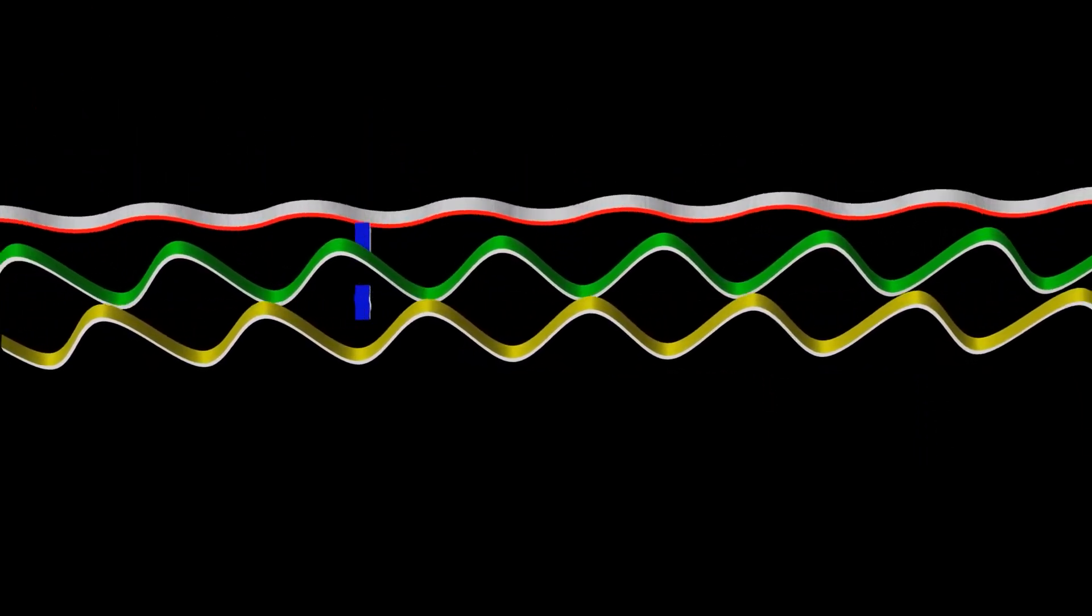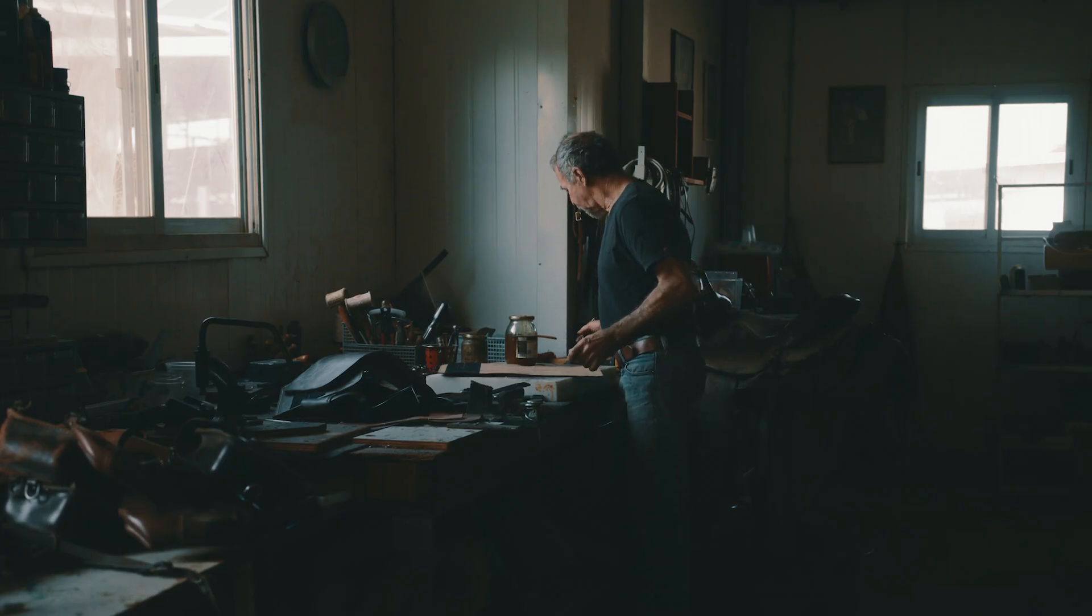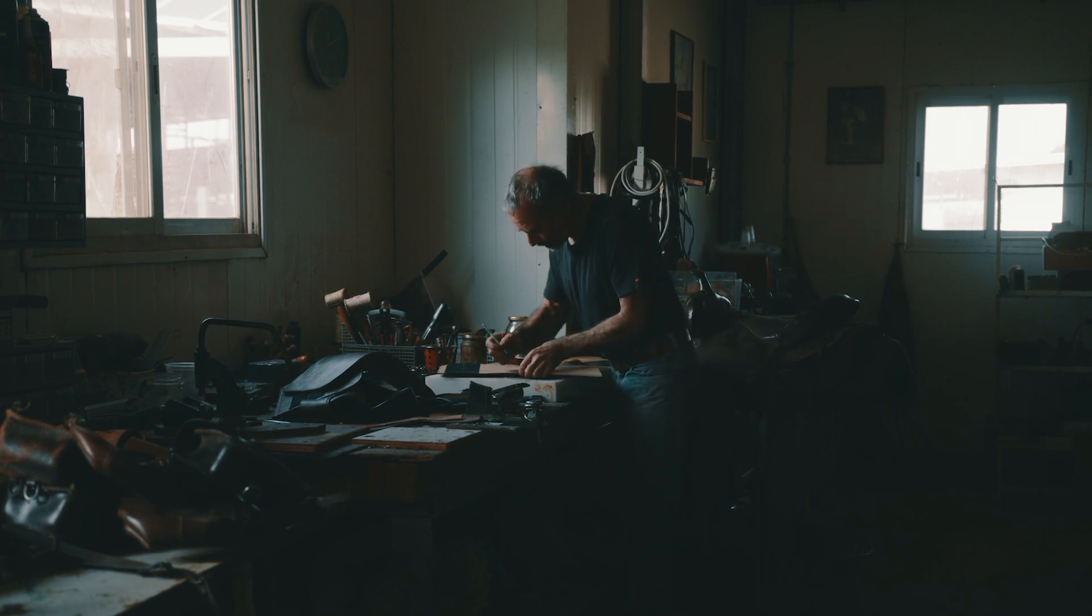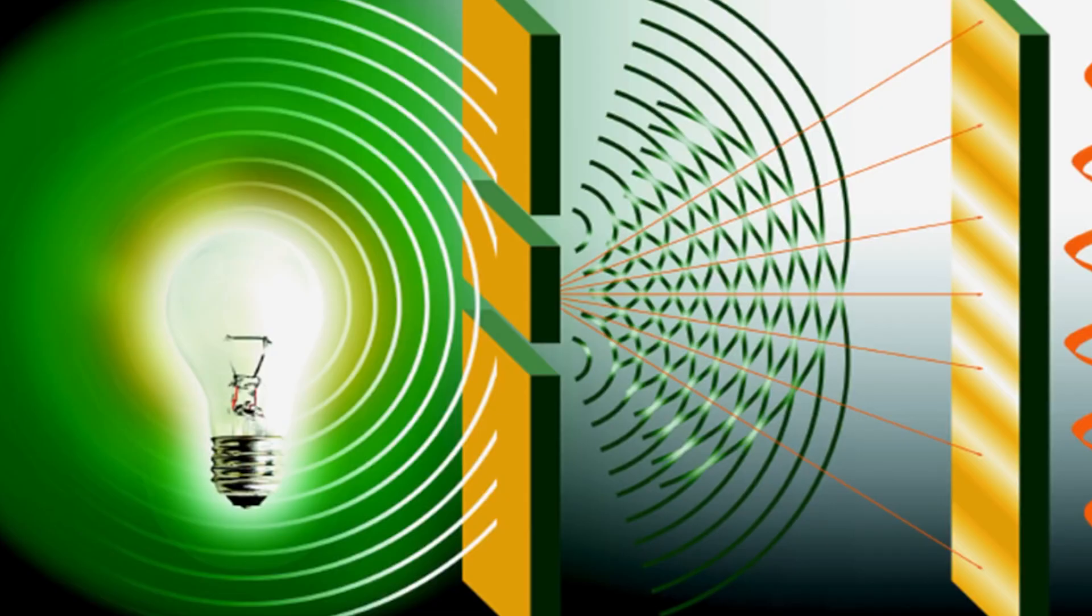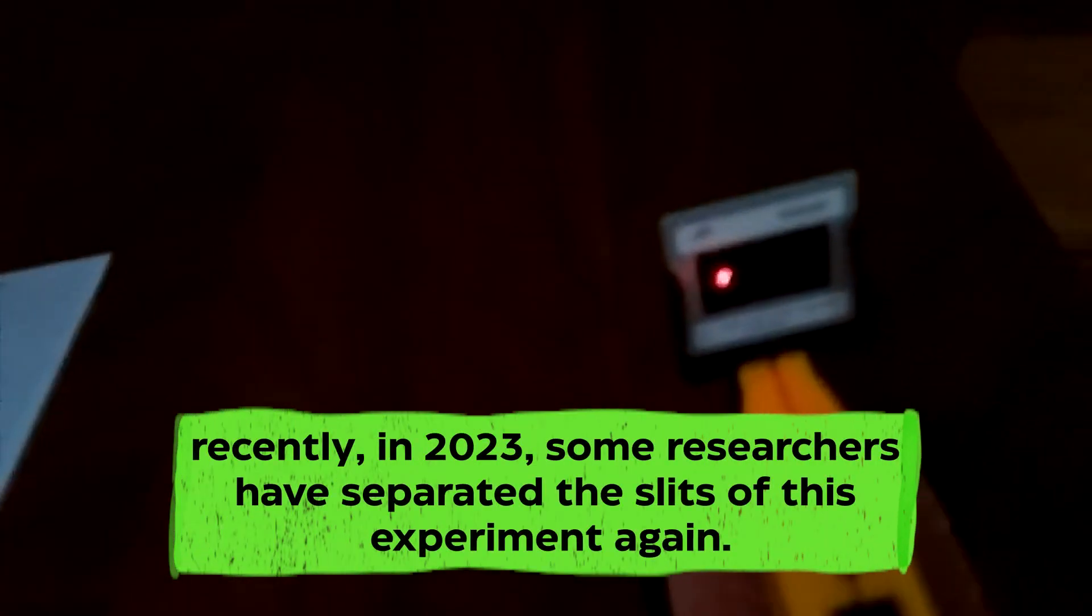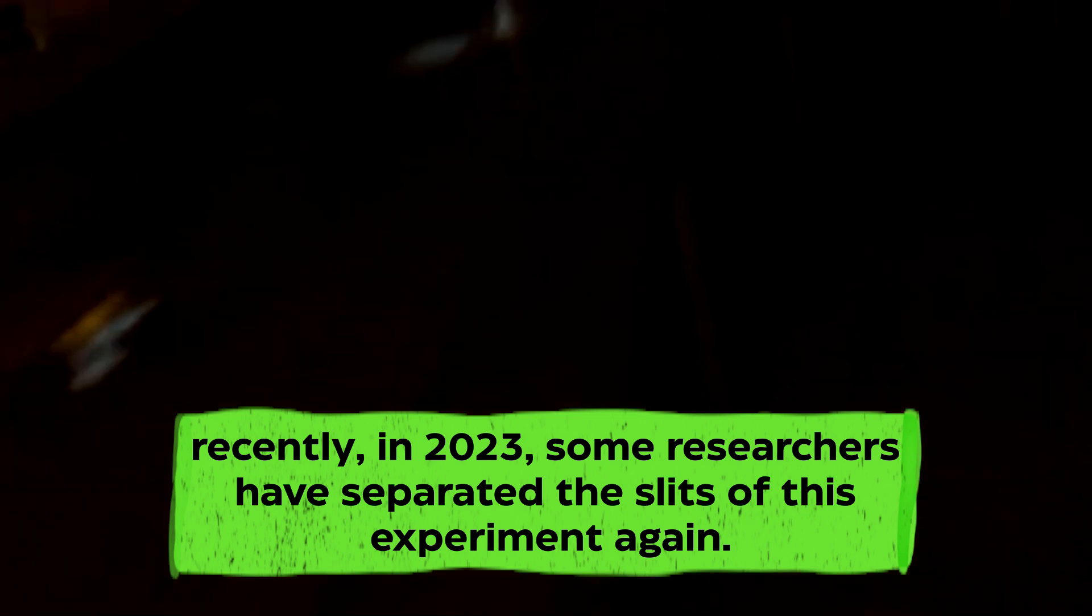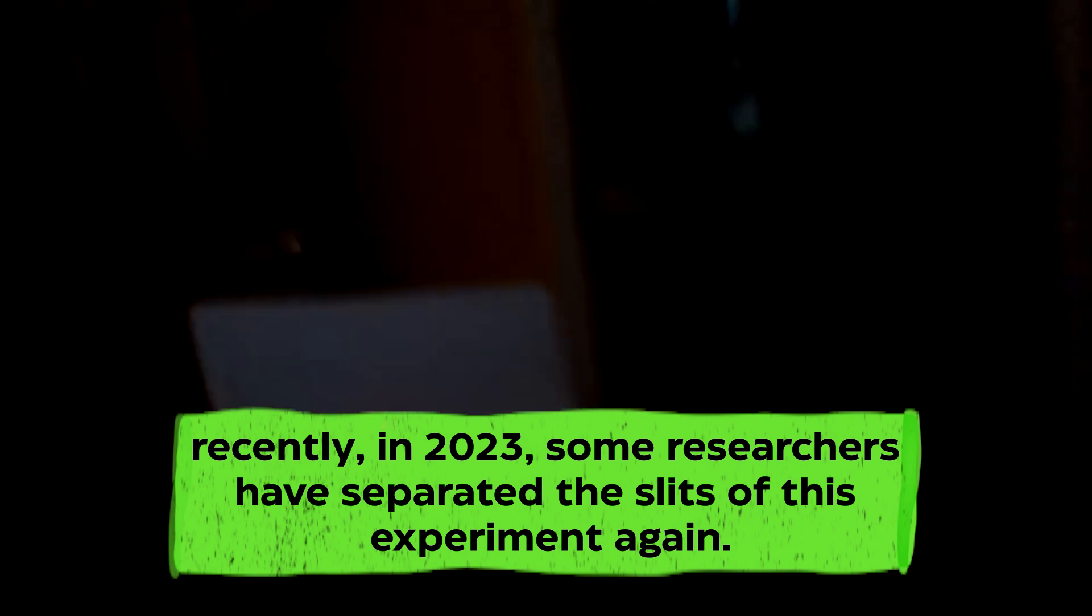Suppose you are an enthusiast who keeps on looking at physics things. In that case, you already know about the experiment where a card with two slits was focused on with light to study how light can behave both as a particle and a wave. But recently in 2023 some researchers have separated the slits of this experiment again. There is one difference in this new experiment, and that is the slits were now separated in time instead of space.